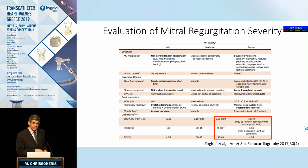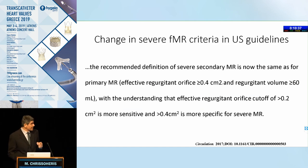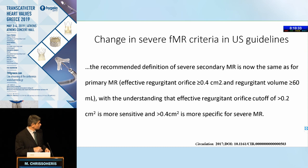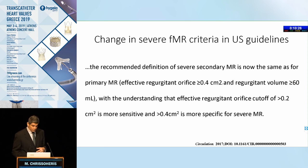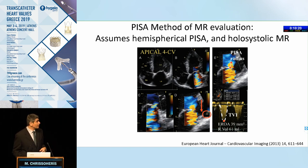So an ERO of 40 mm² is considered severe functional and degenerative mitral regurgitation for the US guidelines, with a regurgitant volume of 60 mL and a regurgitant fraction over 50%. By doing this, we may be more specific in identifying patients with severe MR, but we may lose sensitivity — potentially missing some patients with functional MR who have severe regurgitation but don't meet those cutoff points.